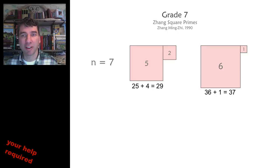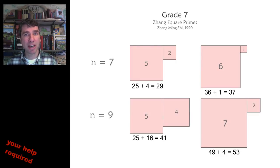And as a bonus, we also have another solution. 6 plus 1 is equal to 7, and 36 plus 1 is equal to 37, which is also prime. For n is equal to 9, that's also true. We have two solutions.